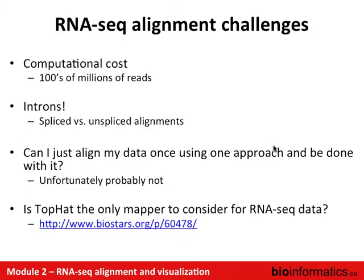Unlike genome alignments, RNA can and often does have splicing, so the alignments are spliced. You probably can't just align your data once and be done. Depending on what downstream processes you're doing — for example, fusion detection might require a different alignment strategy than expression estimation — you may find yourself having to redo alignment with different parameter settings or a different algorithm.